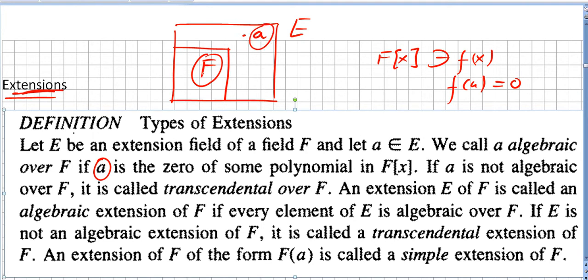If a is not algebraic over F, it is called transcendental over F. So if there is no f(x) in the ring of polynomials such that f(a) equals zero, then we say that a is transcendental over F.